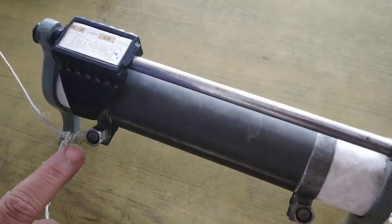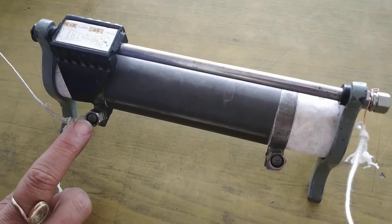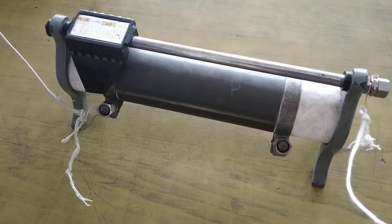This is a rheostat. Its function is to vary the current in a circuit. If the value of R increases, the current through the circuit decreases.